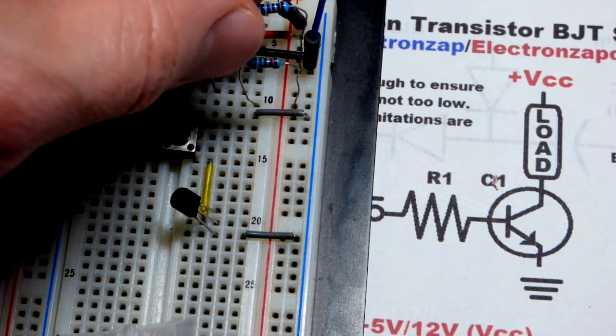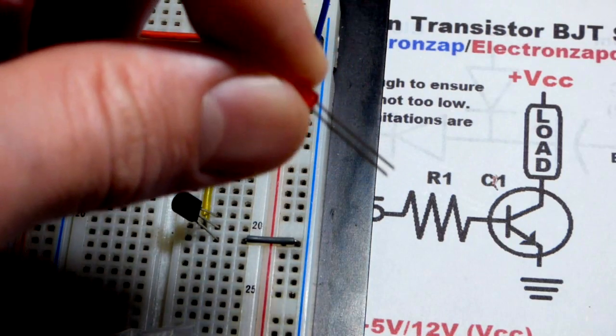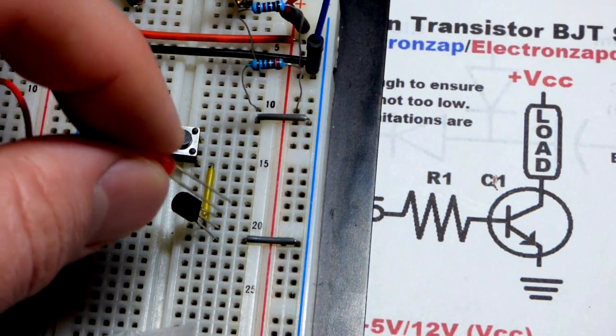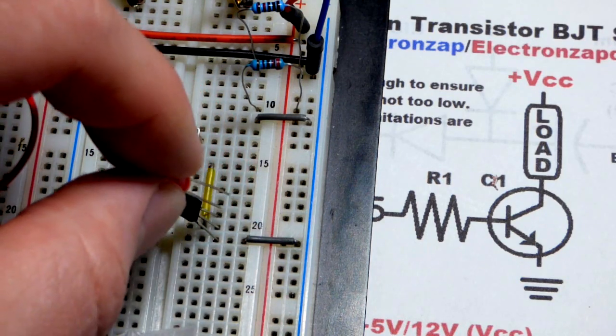So we're going to take the LED here. That's going to be part of the load. And so we're putting the short lead, the cathode, because that heads towards ground, to the collector up there.